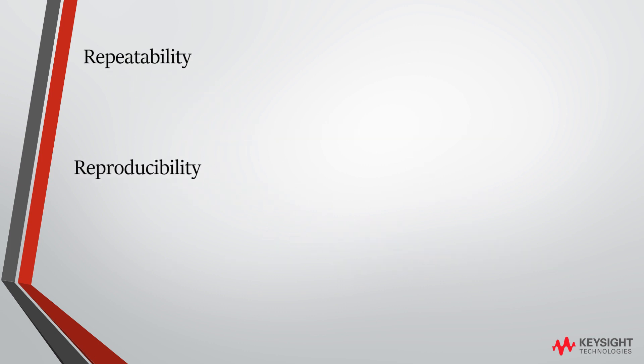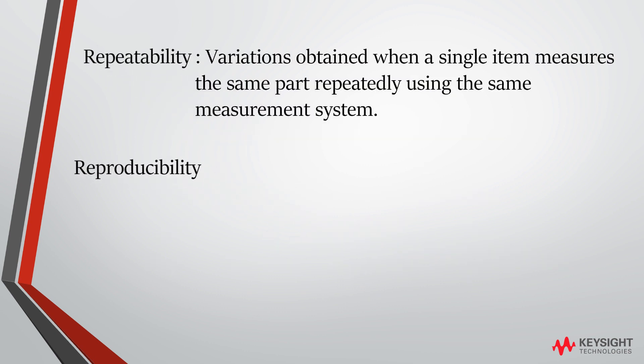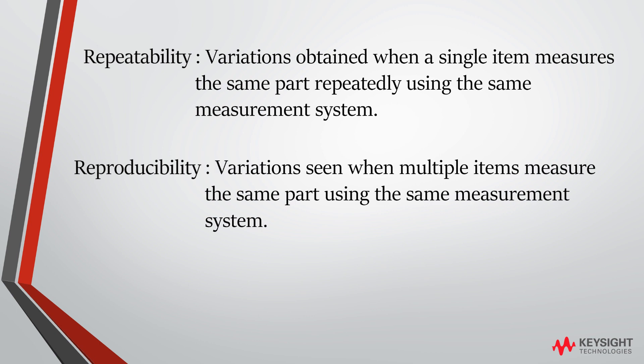Repeatability refers to variations obtained when a single item is measured repeatedly using the same measurement system. Reproducibility refers to variations seen when multiple items are measured using the same measurement system.